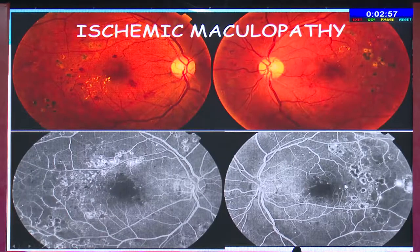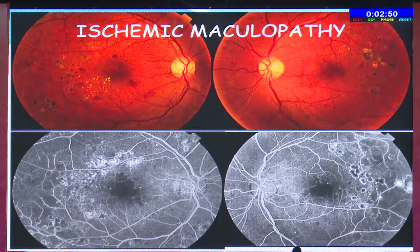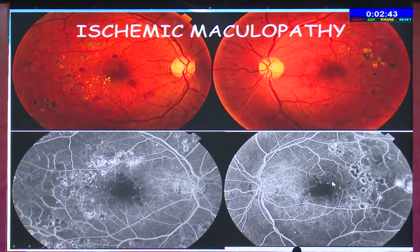Before starting treatment for diabetic macular edema, it is important to look for any point of ischemia in the macula. As seen here, the foveal avascular zone is increased in size and irregular — this is a sign of ischemic macula.